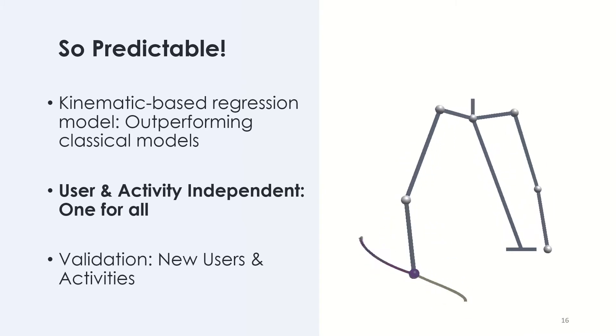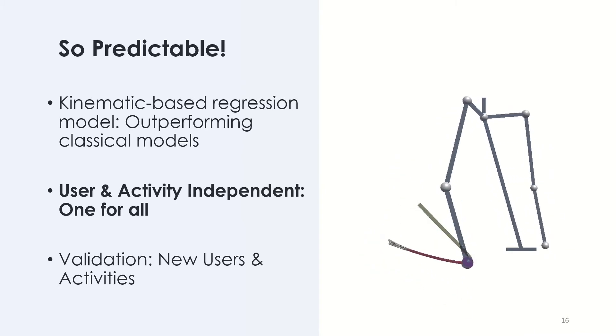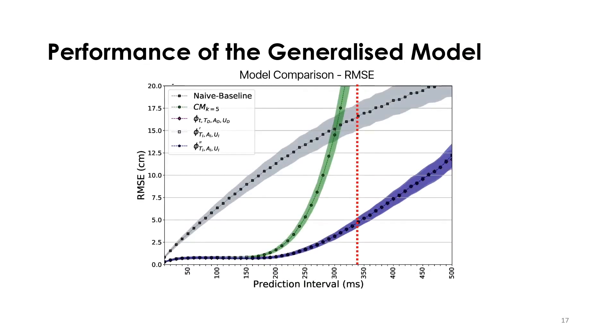Next, I will discuss how we evaluated our model. For testing data, if we predict the hand location 300 milliseconds ahead, our root mean square error was 3.15 centimeters. And for predicting times less than 200 milliseconds, RMSE is lower than 1 centimeter.